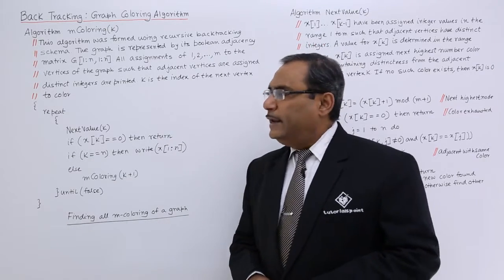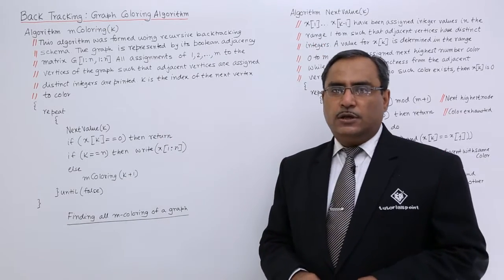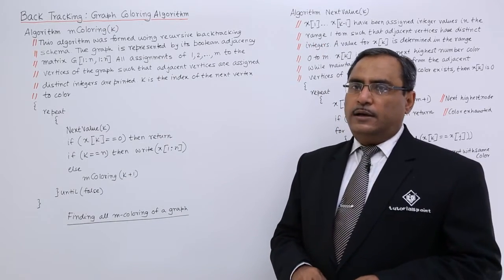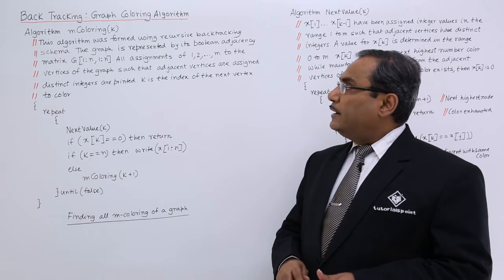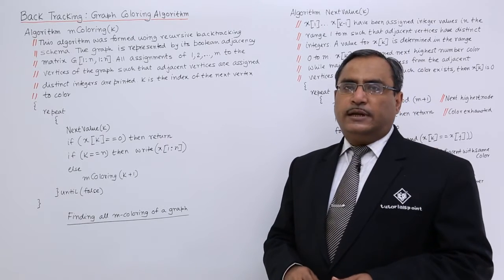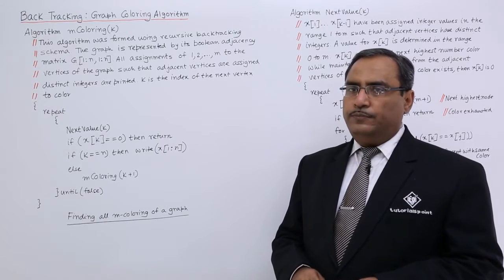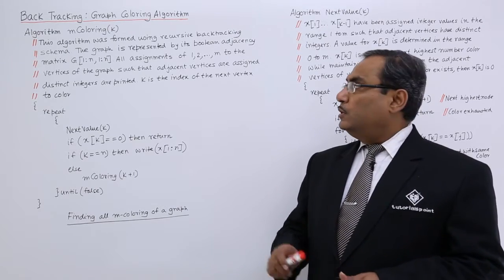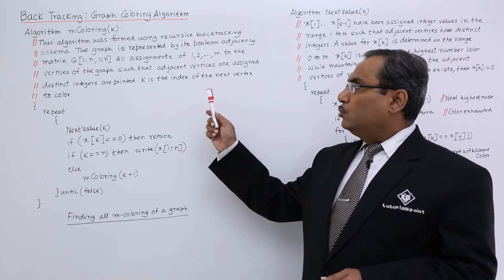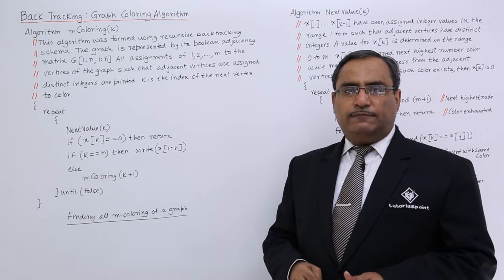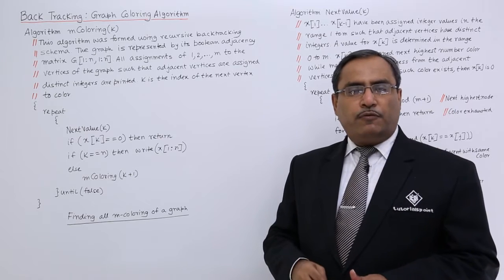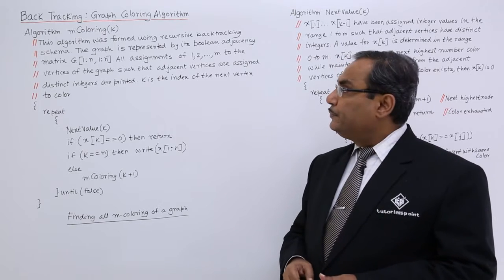Here we will be having mainly two functions: one is the m-coloring, and another one is the next-value. Let us go through the m-coloring first, then we shall go for the next-value.